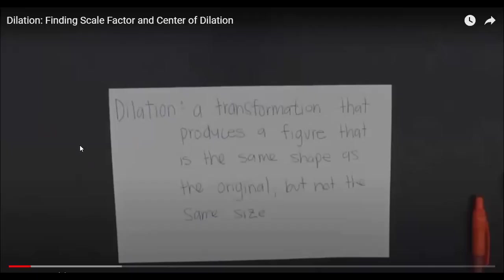Today we are going to study dilations. Dilation is a transformation that produces a figure that is the same shape as the original but not the same size. The pre-image can be smaller or larger than the image. If the pre-image is smaller than the image, the figure undergoes enlargement — it becomes bigger. And the opposite: if the image is larger than the pre-image, the figure will be a reduction or shrinking. So dilation is a type of transformation where we have the same shape but different size.